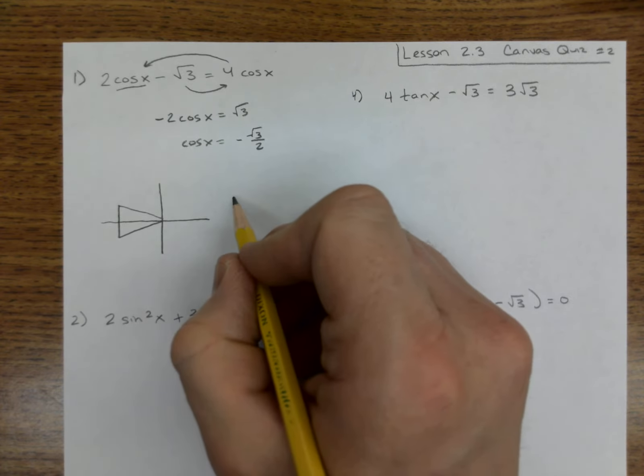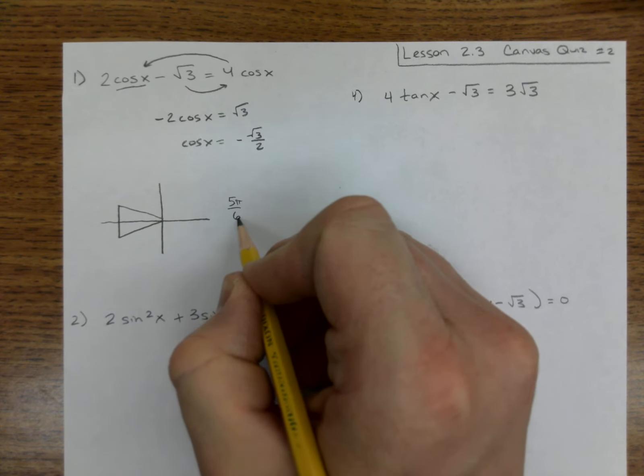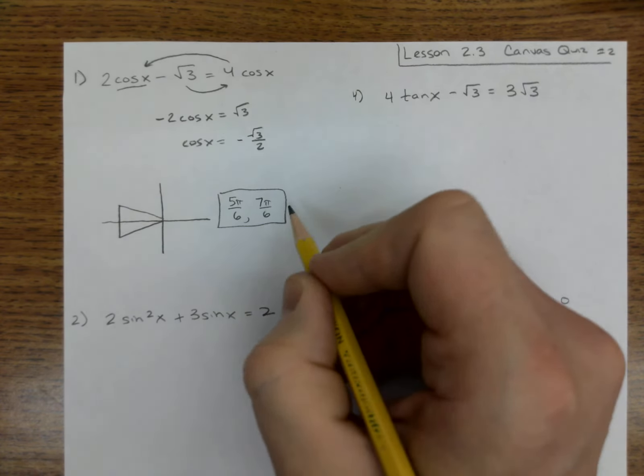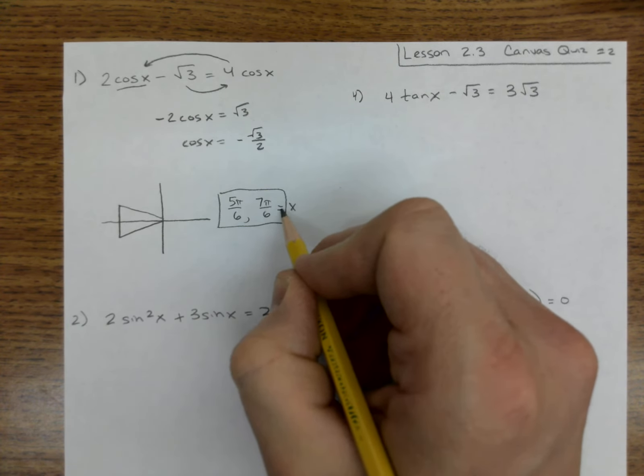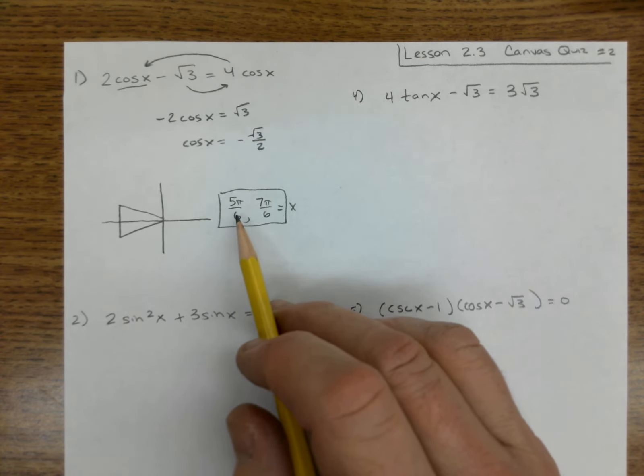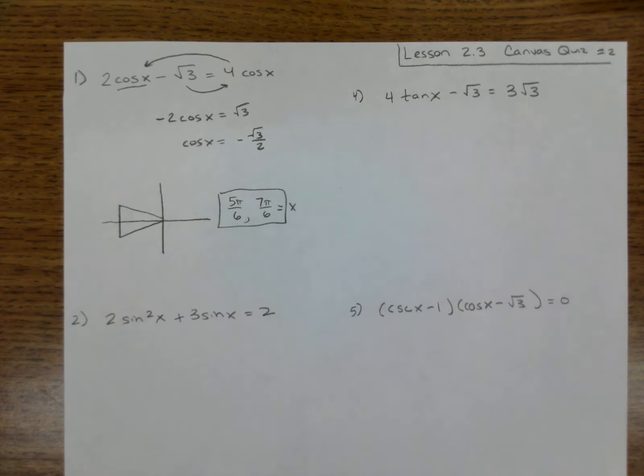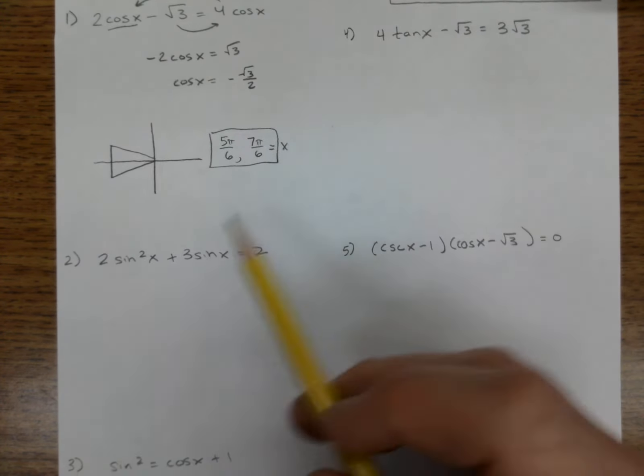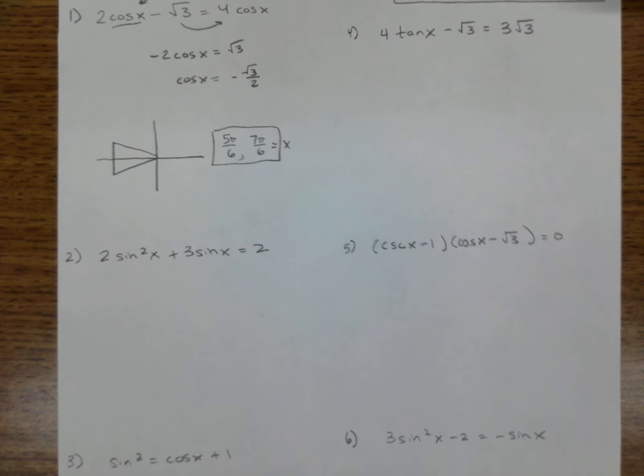So I need those two angles: 5π over 6, 7π over 6. And we know if we wanted to find the general solution we could just add on a 2π into both of them, but we're going to leave it as just in the first one trip around the circle.